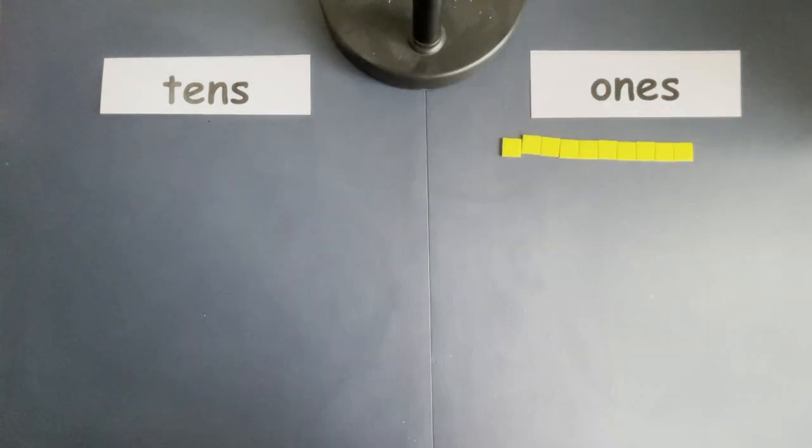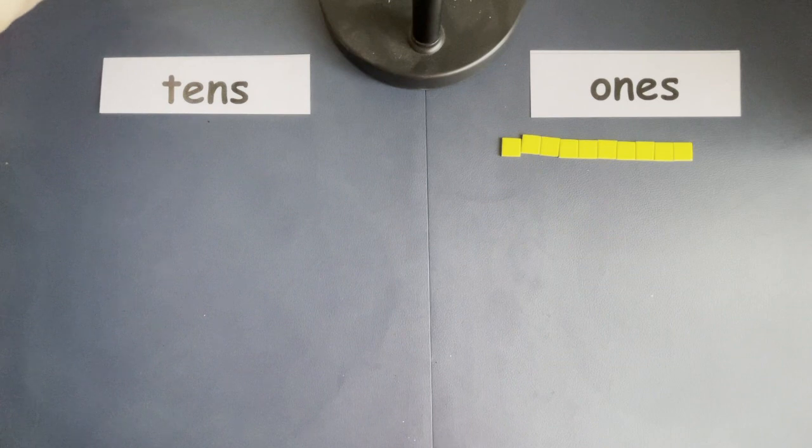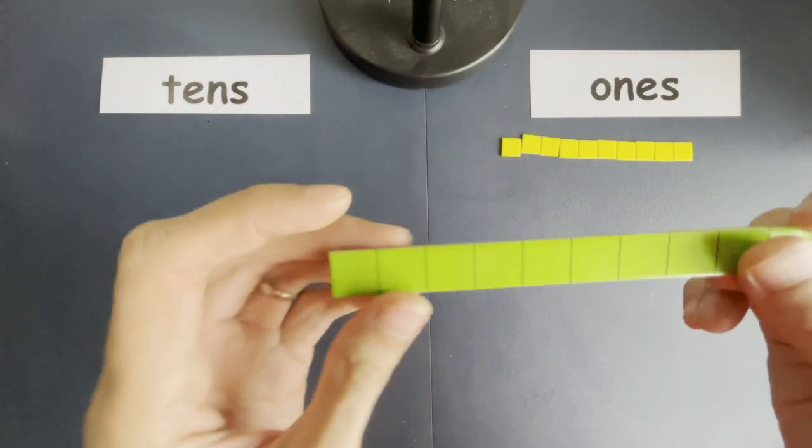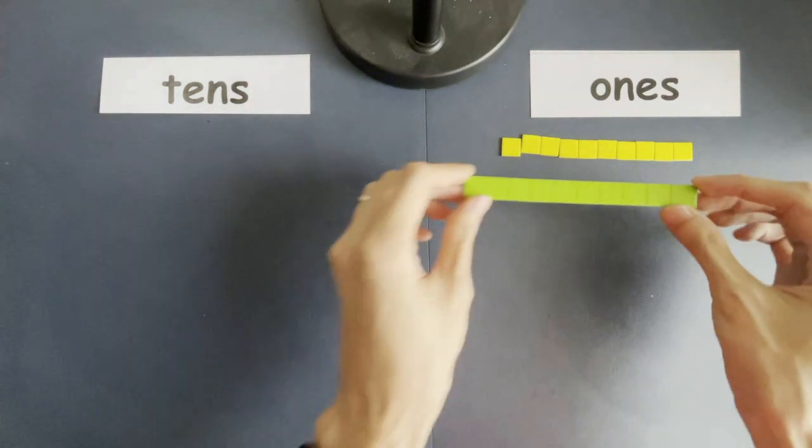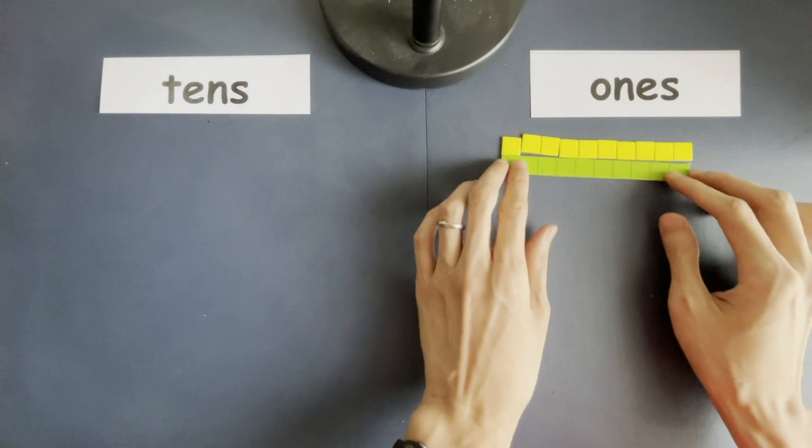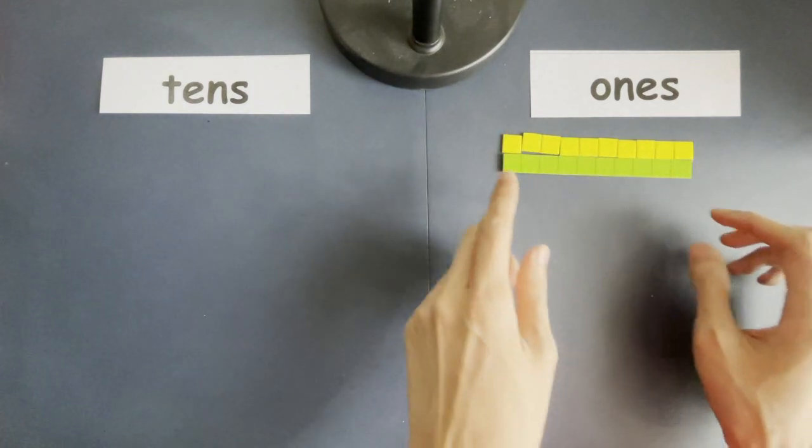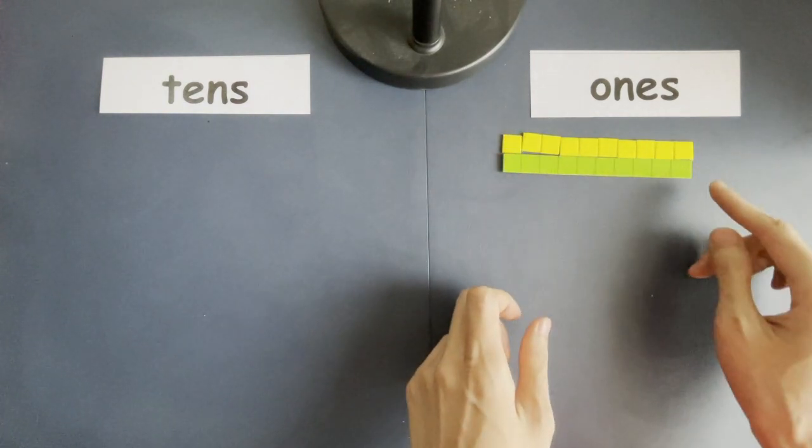Now, I'm going to combine them together and I get one ten. Okay, what does one ten mean? It looks like this. Okay, I'm going to put it right over here and you can see these ten ones is the same as one ten.